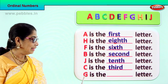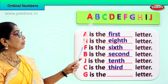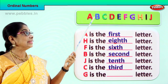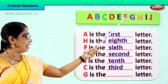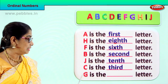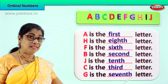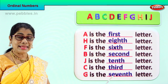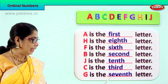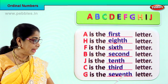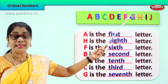Now let's look at one more letter — G. In the ordinal position, where is G? A is the first, second, third, fourth, fifth, sixth — seventh: G. Letter G is the seventh letter. Spell seven and add TH: S, E, V, E, N, T, H — seventh. G is the seventh letter.